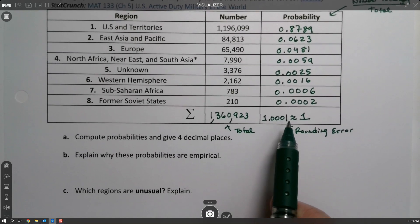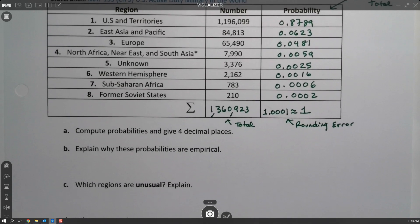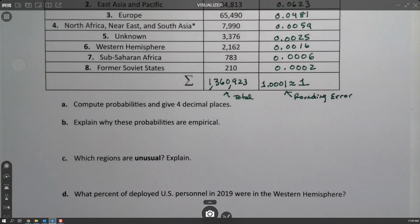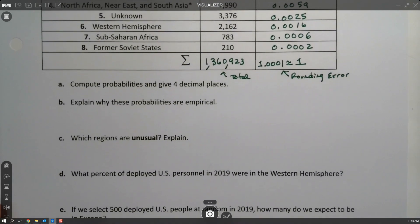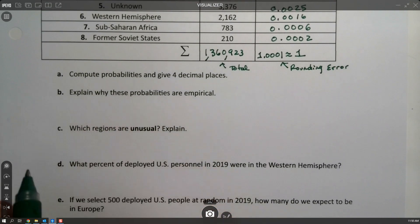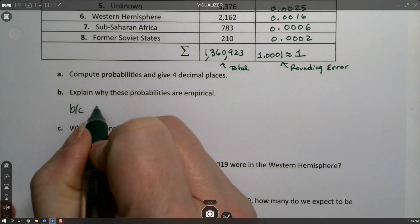Now why are these probabilities empirical? Well they're empirical because they were calculated from real-life data.